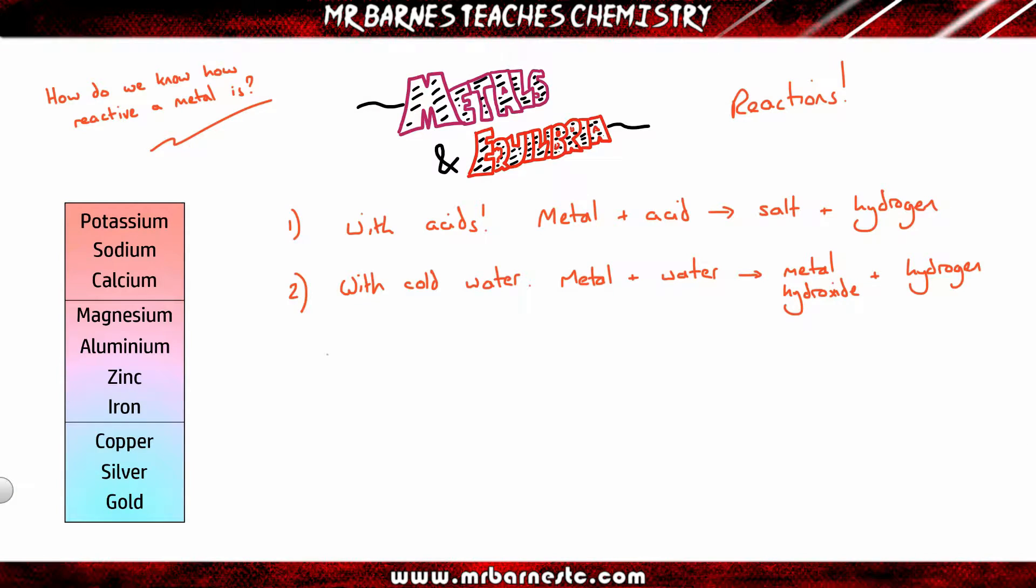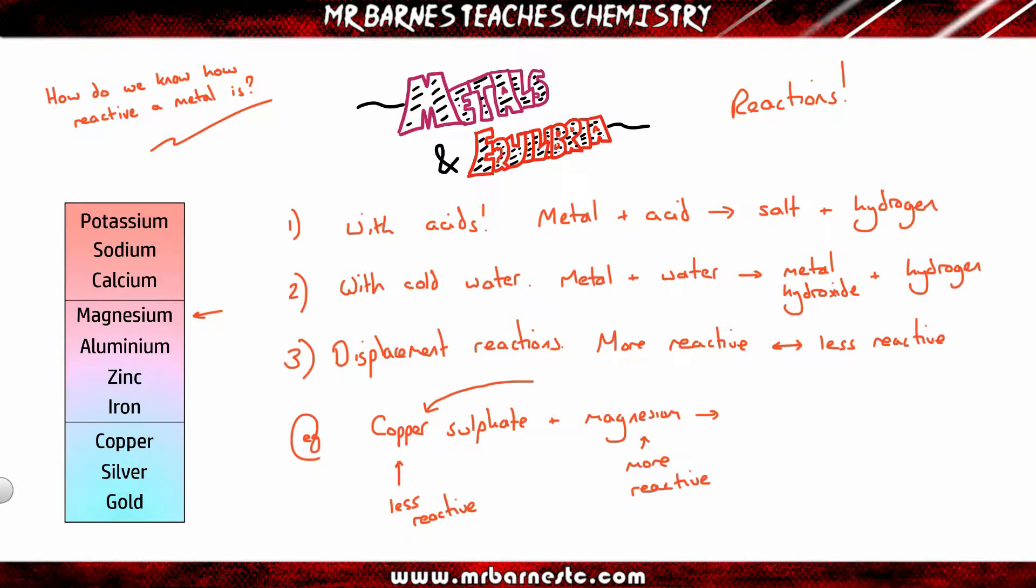The third type of reaction you can look at is displacement reactions. The more reactive metal is always going to swap places with the less reactive metal to end up as part of the compound. For example, if I take copper sulphate and react it with magnesium, you can see on the left magnesium is more reactive than copper. The more reactive one wants to be part of the compound, so they will swap around. You'll end up with magnesium sulphate and copper left on its own. The more reactive one will always end up as part of the compound. Usually you'll see a colour change.